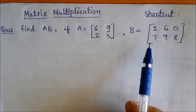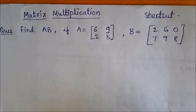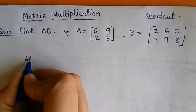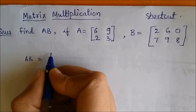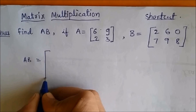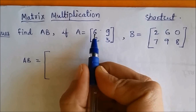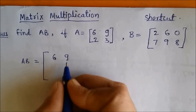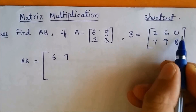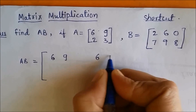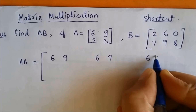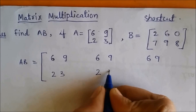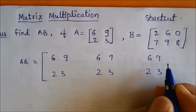Multiplying them element-wise and then taking the sum. So let us start. The product matrix AB — since we are doing it quickly using a shortcut, see how I am doing this. I will write the first row of A, which is 6 and 9, three times across. Then the second row, which is 2 and 3, also written three times.